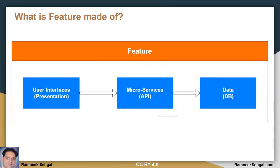And what is a feature? A feature is made of three components: it will have a user interface which is called the presentation layer, and it will be coordinating with some kind of back-end APIs — it could be microservice based or any other way — and each API will be coordinating with a database to store and retrieve information. So these three components combined is called a feature, and to build any kind of functionality we need these three components.